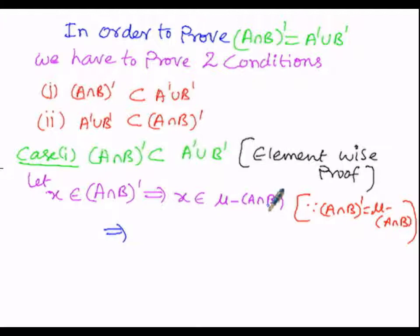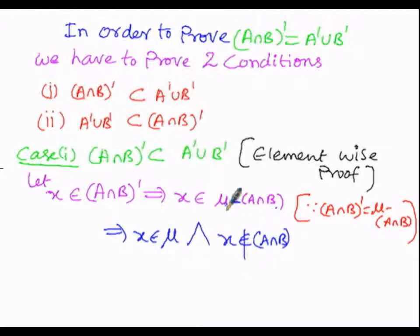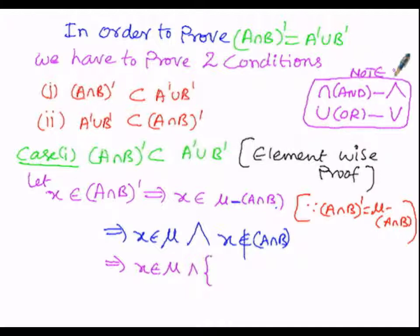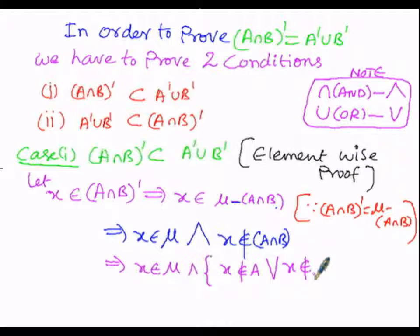Subtraction indicates that X does not belong to the second set but belongs only to the first set. So X belongs to mu and X does not belong to A intersection B. This can be elaborated: X does not belong to A intersection B. Since intersection means 'and,' if X belonged to A intersection B we would write X belongs to A and X belongs to B. But since it does not belong, we write X does not belong to A or X does not belong to B — so intersection becomes union.